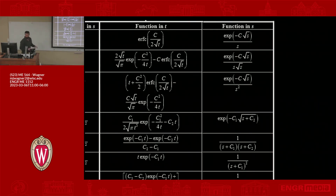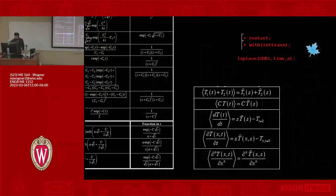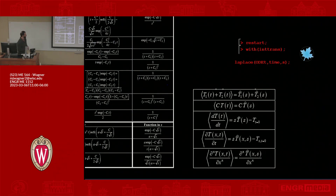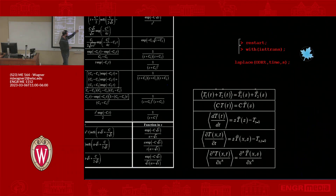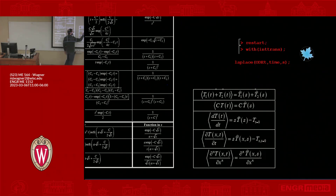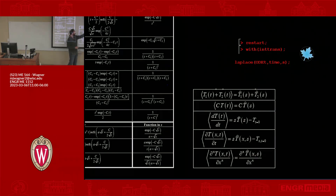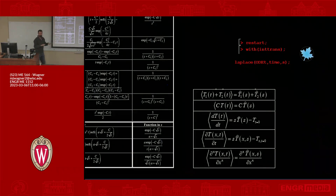That's the quick overview of the Laplace transform. There are a couple of properties we should talk about. The first is linearity: if I take the Laplace transform of the sum of two terms that are functions of time, that's equivalent to individually taking the Laplace of each term — Laplace of the first plus Laplace of the second. So you can break apart problems and do each separately.